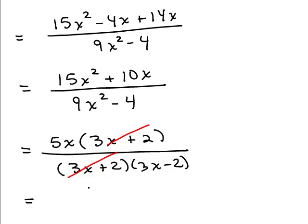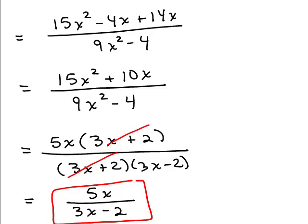So what do I have left in the numerator? Remember, if you don't see anything left in the numerator, there's at least a 1. But in this case, I have a 5x actually. So 5x all over 3x minus 2. There you go.